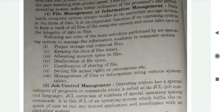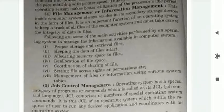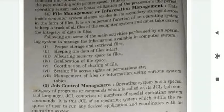Whatever data is stored in a computer, it is stored in secondary storage devices in the form of files. The operating system's important function is to maintain the integrity of data in files. The following are some of the main activities performed by an operating system to manage the information available in a computer system.